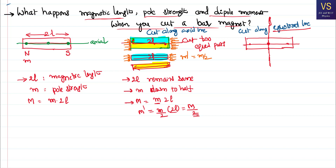When you cut the magnet along the equatorial line into two pieces, each piece has a north pole and a south pole. The original north pole remains in piece one, and the original south pole remains in piece two. Each cut face becomes a new pole — the cut face of piece one becomes a south pole, and the cut face of piece two becomes a north pole. Because opposite poles are nearby, these two pieces get attracted towards each other.